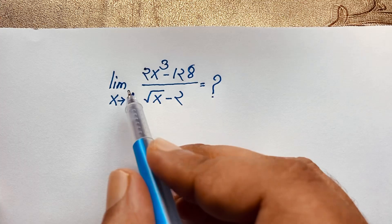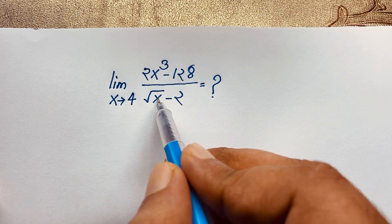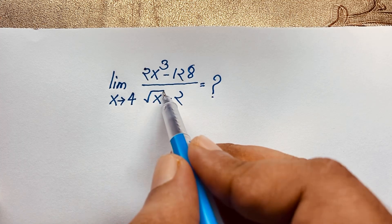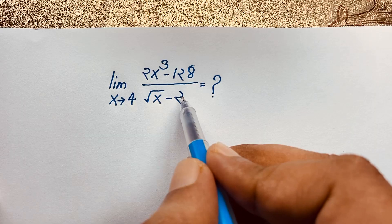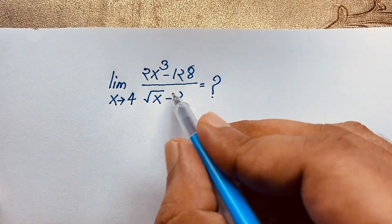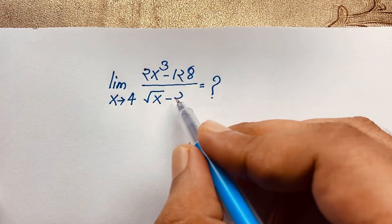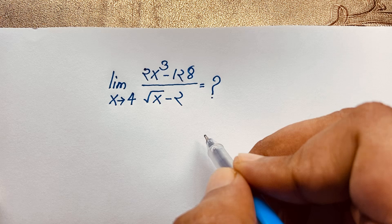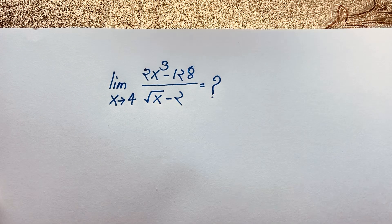First of all, if we try x equal to 4 directly: √4 equals 2, and 2 minus 2 equals 0. So the denominator becomes 0, which is undefined. So how to solve this interesting limit question?